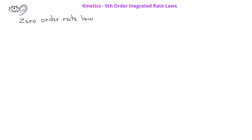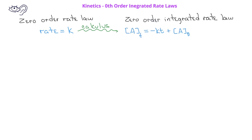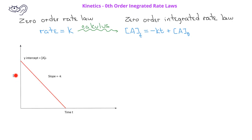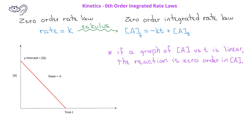We've also talked about zero-order rate laws. These have the form of rate equals the rate constant k. If we do some calculus on the zero-order rate law, we get the zero-order integrated rate law, which takes the form: concentration of A at time t equals negative kt plus the concentration of A at time zero. This again looks like y equals mx plus b, which means we can make a graph of concentration versus time. The slope of this line is the negative rate constant. If we graph concentration versus time and it produces a straight line, we would know that the reaction was zero-order with respect to the concentration of A.